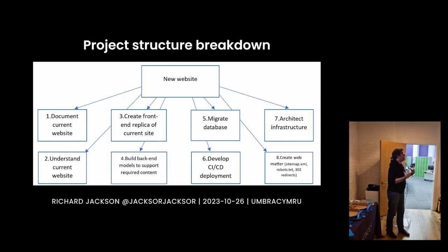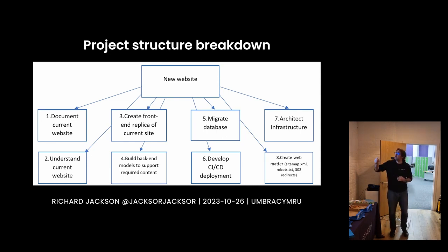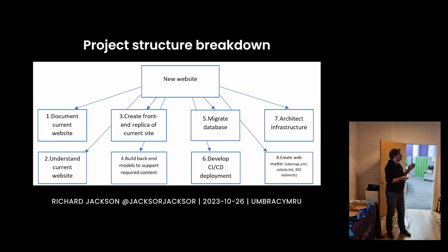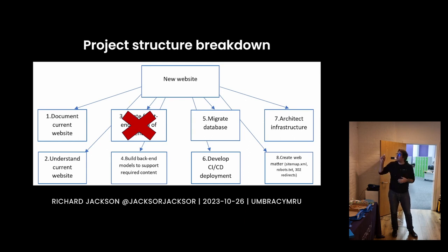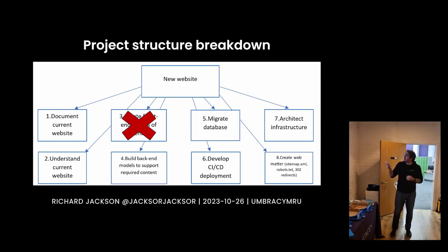This was the project structure breakdown I put together. This was a solo project, so a lot of this ended up being about learning project management techniques, which I'm really interested in — done in a very poor and amateurish way, but that's the learning. Split into roughly eight sections: documenting and understanding the current website; creating a front-end replica of the current site, though that got cut quickly because we decided we didn't like the current website anyway; building the back end; migrating the database — a fun thing when you have a static site, because you don't have a database, you have markdown files, so migrating from nothing to SQL; and developing a CI/CD architecture and creating the web matter.